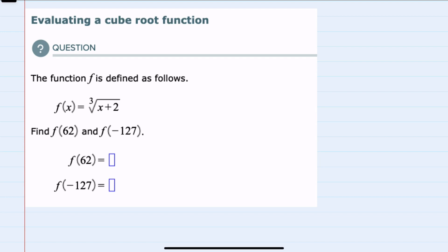In this video I'll be helping you with the ALEKS problem type called evaluating a cube root function. We're given the function f of x and asked to find both f of 62 and f of negative 127.